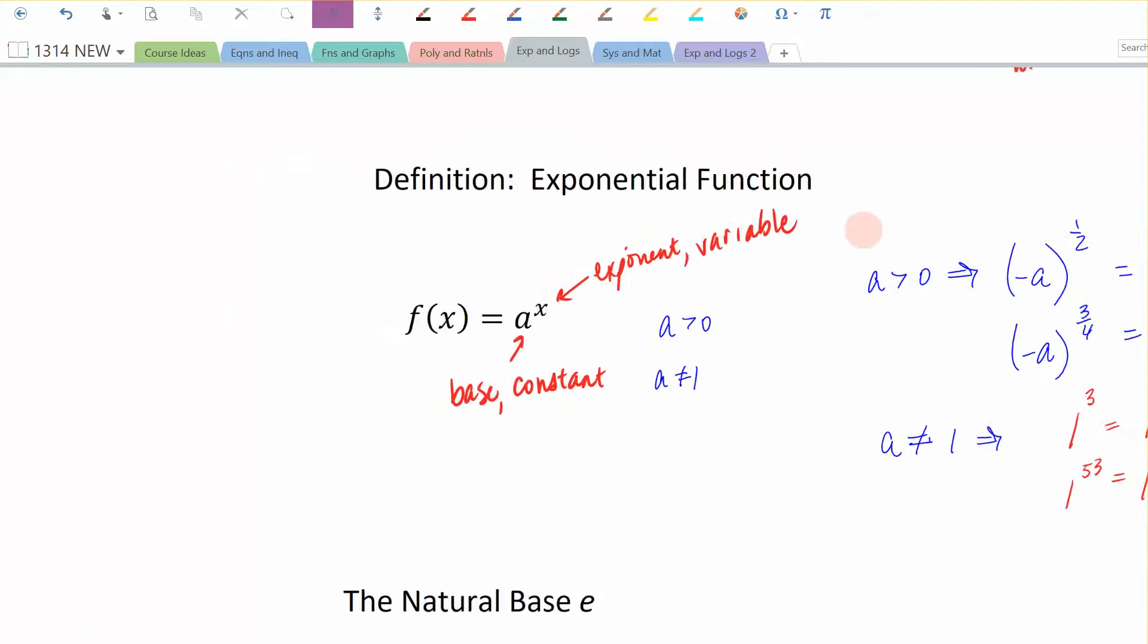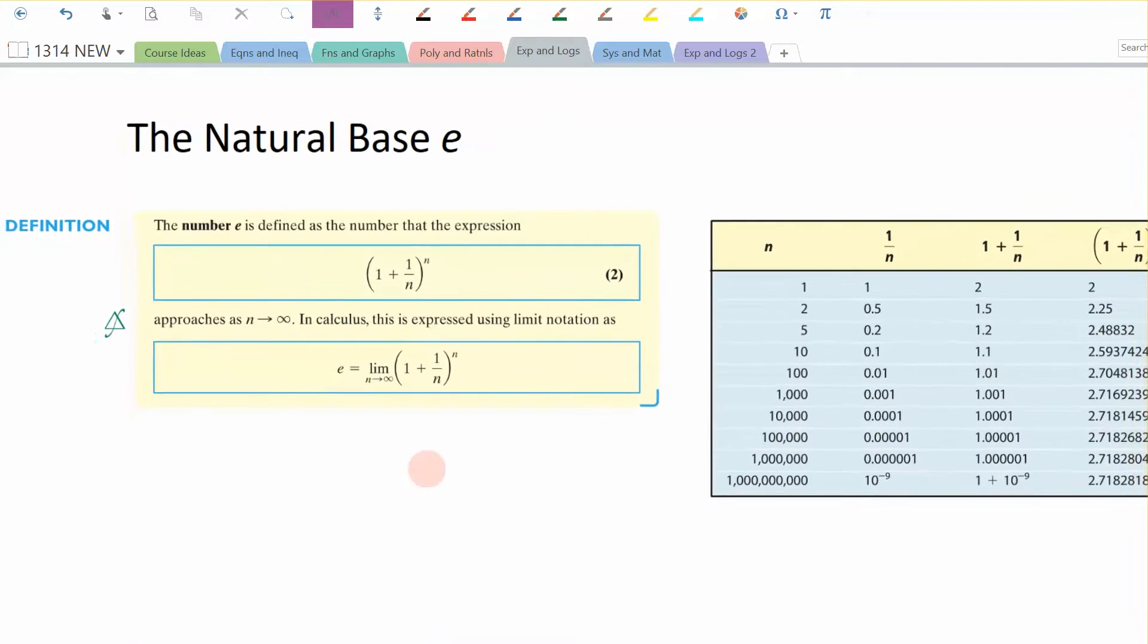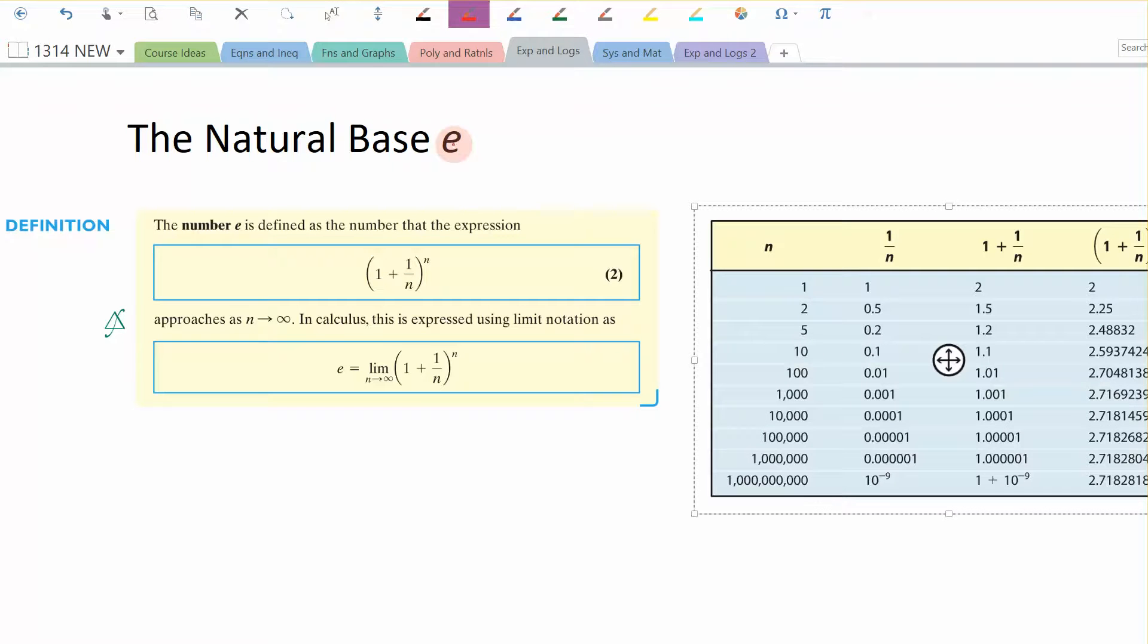Now, the next thing that I want to talk about, because we're going to be using the natural base of e in this chapter. So it's kind of nice to see where the number e comes from, or the base e. We're going to use it as a base. E is a number that, if you were to look on your calculator, exists. So just like pi is approximately 3.14159, blah, blah, blah. The number e has a decimal representation, which is somewhere around 2.7182, blah, blah, blah.